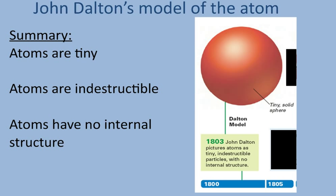So summarizing John Dalton's model of the atom: atoms are very, very tiny. Atoms are indestructible. They cannot be broken down into smaller pieces. And atoms have no internal structure. They are just small, solid particles. Nothing unique about those particles.